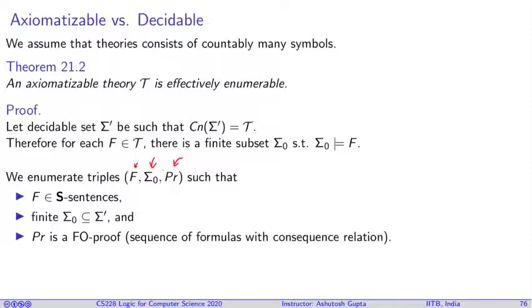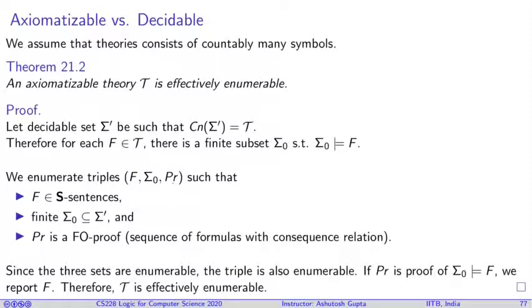Now what we can do for every finite subset of sigma prime and every list of formulas, because there are countably many formulas, you can create all possible finite lists. So therefore these triples is a countable set. We can enumerate these triples and check if this proof is actually proving that sigma not implies F. So it gives us a means of enumerating elements of theory T. You create these triples and put them in a sequence, and you start from one end. Whenever you hit a triple that is a valid triple, then you report F as the element of set T.